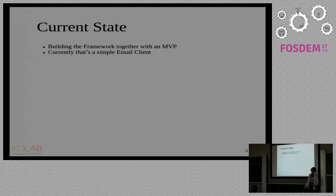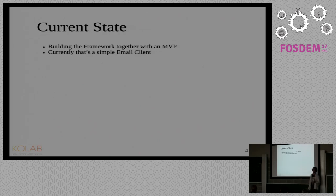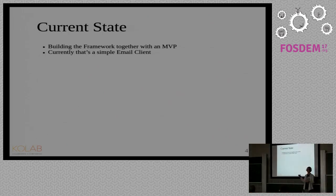So where are we right now? Kube is in a fairly early state of development. We've worked on it for the last year, but it was a lot of framework building, figuring out the architecture, and preparing so that we can scale up the development. Initially, we're focusing on email only — we're building a simple email client as our MVP of sorts, because that's just the hardest use case data-wise. If we can deal with a million emails or folders that contain like 60,000 emails or so, a to-do list is not going to be a problem.